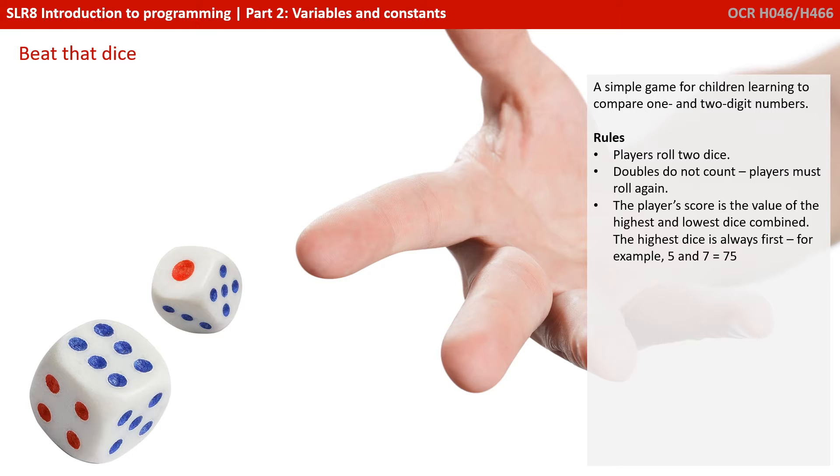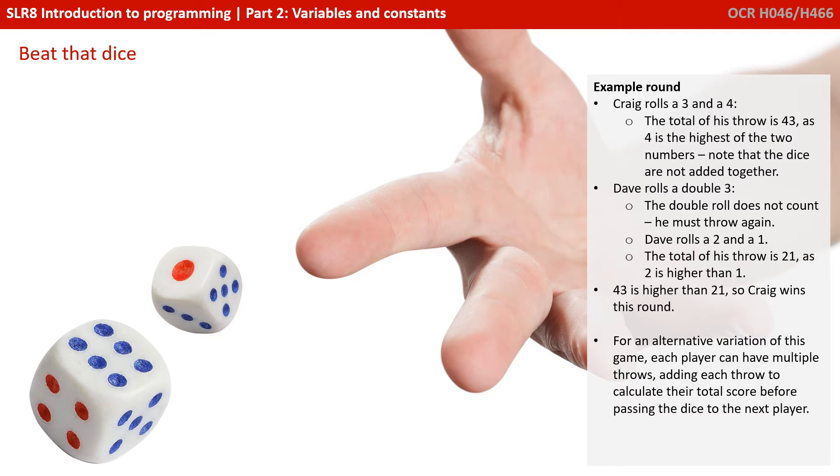A player rolls two dice. Doubles do not count and must be rolled again. The player's score is the value of the highest and the lowest dice combined. And the highest dice is always first. So if a 5 and a 7 were rolled, the result would be 7-5, 75.